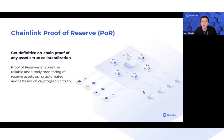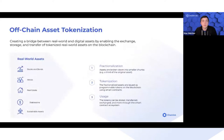The Chainlink node network pulls the reserve assets on-chain for everyone to verify any given token's backing. There are different types of asset tokenization. There are off-chain assets — things like stablecoins, precious metals, and different structured financial products.